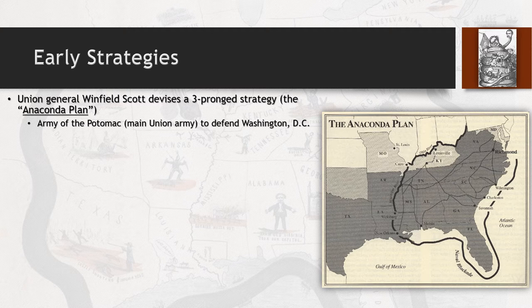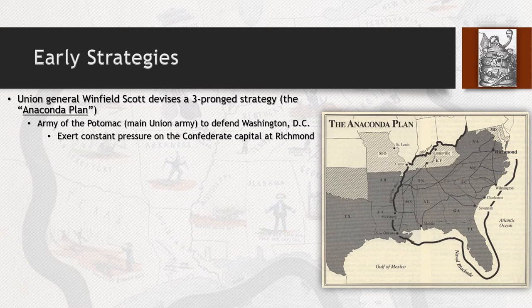The Army of the Potomac is the main Union army used to defend Washington, D.C., located in and around Virginia. This is where a lot of the northern battles are fought, and the Army of the Potomac is dispatched probably six to twelve times over the course of the war. Their main goal is not only to defend Washington, D.C., but to constantly exert pressure on the Confederate capital, Richmond, Virginia — which is only about 100 miles from the Union capital.